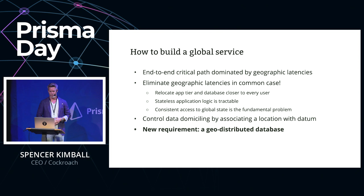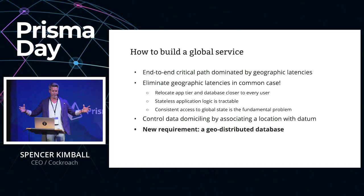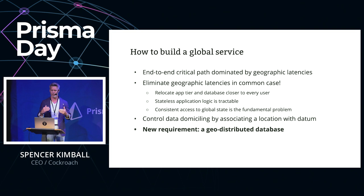How do you do this? When optimizing any system, ask: what's your critical path and what's the biggest component of it? If you attack a component that accounts for 5% of total latency, that's the most you can improve it. If you attack the component accounting for 60 or 70% of total latency, you can make a huge difference. The ultimate way is to eliminate geographic latencies — at least the big ones — in the common case: 90 to 95% of the time.